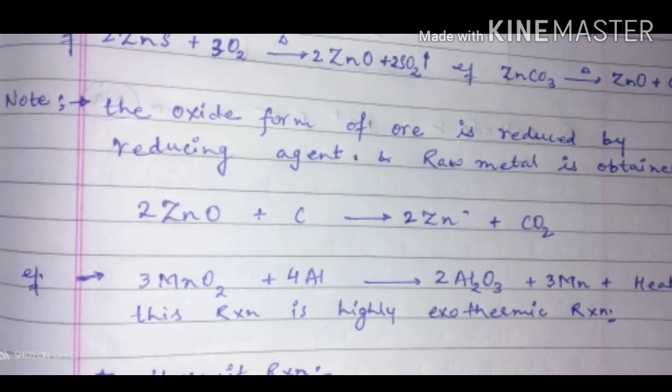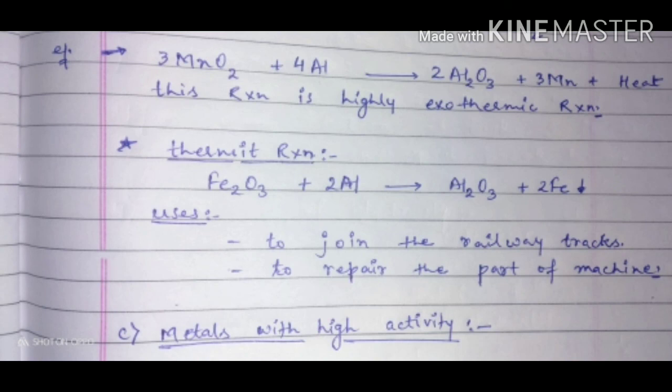The thermite reaction: iron oxide in the presence of aluminum converts into aluminum oxide and iron. In this reaction, the iron obtained is in a molten state. Because of this, the thermite reaction is used to join railway tracks when they crack, or to join cracked machine parts as well.